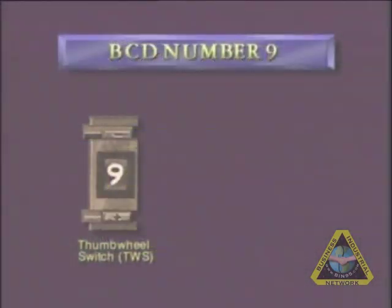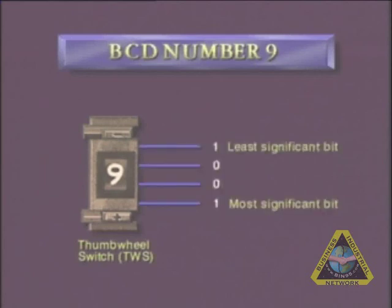When we select numbers in thumb wheel switches, the switch, in actuality, sends to the input module of a PLC four lines representing each number, each line being on or off, to signify the one or zero condition according to the number selected in the thumb wheel switch.